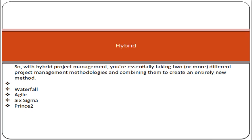The next approach is hybrid. The hybrid approach means combining two or more project management methodologies for the implementation of a project. For example, you can take waterfall and agile, or agile and Six Sigma, and combine these two approaches. There are many approaches available today — waterfall, agile, Six Sigma, and others — and you can take any two and combine them to implement a project. That is the core concept of hybrid project management.